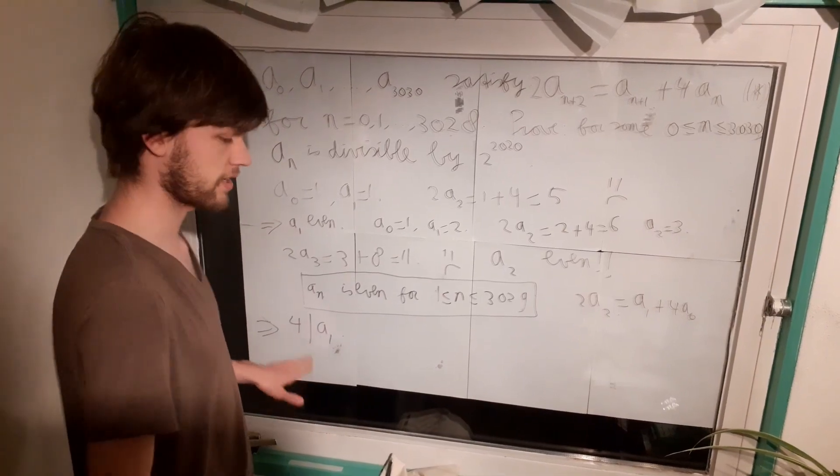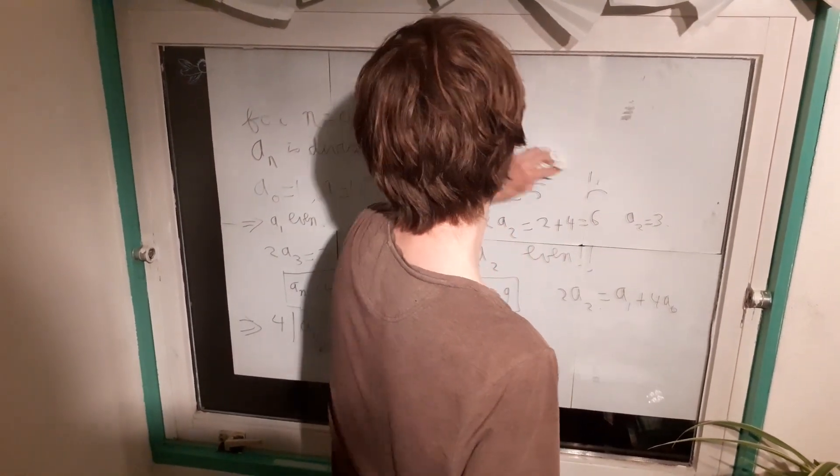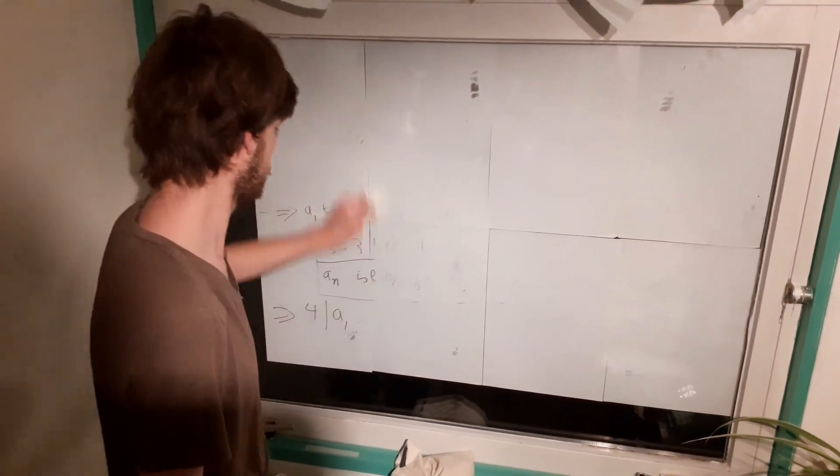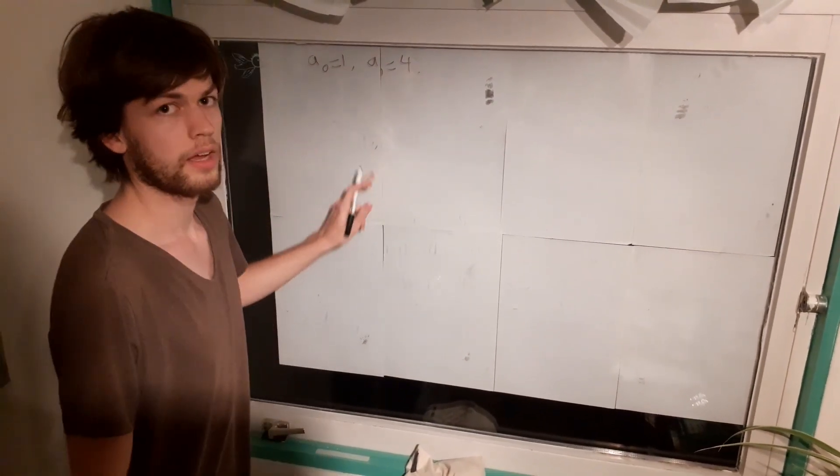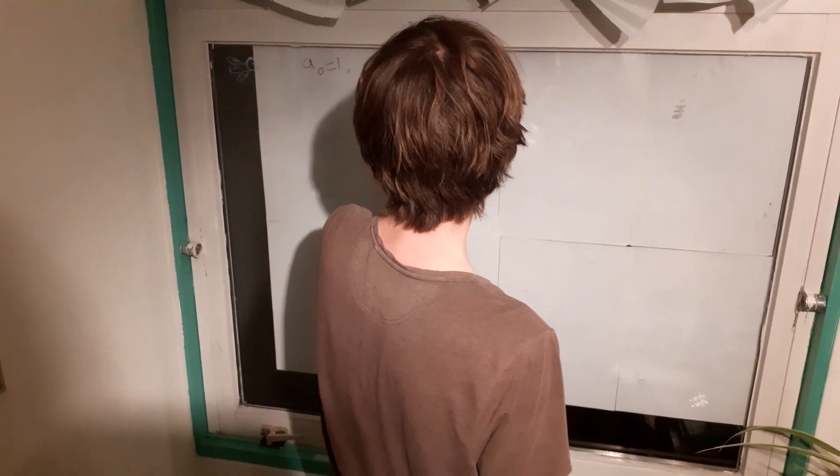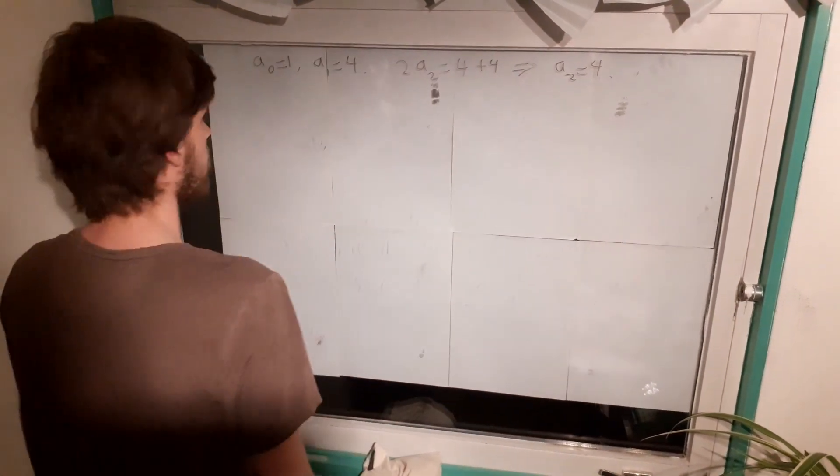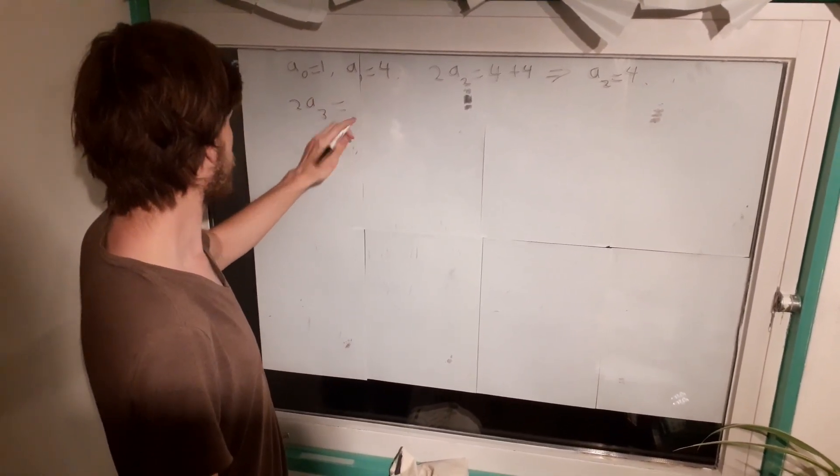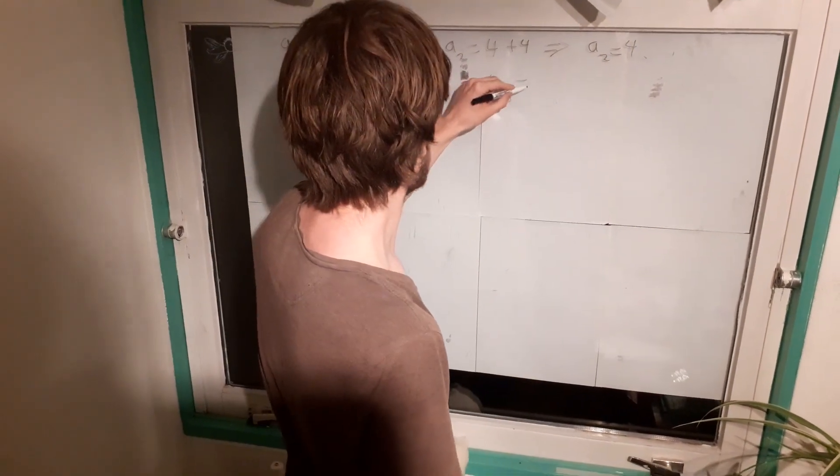Alright, so maybe we can make an example where this is actually true. I've erased this now, but just remember the formulas, okay. Okay, apparently we want a1 to be divisible by 4. So we will do it now. a1 is 4. And then we have 2a_2 equals 4 plus 4. So a2 equals 4 as well. Very nice. Yes. And then we get, we can calculate a3. 2a_3 equals 4 plus 16 is 20. So a3 is 10.